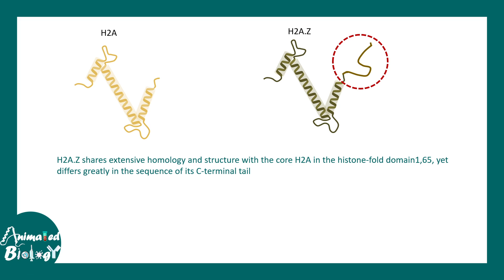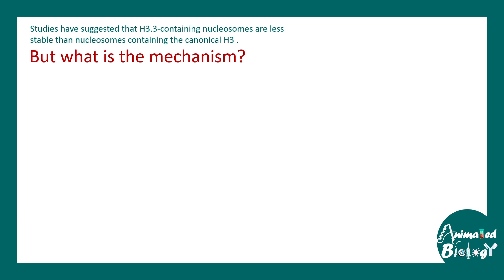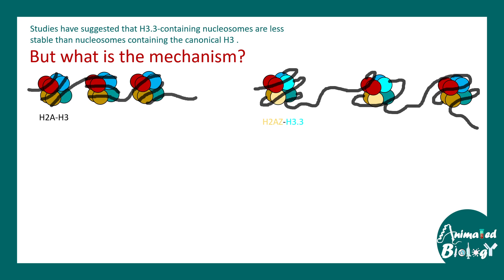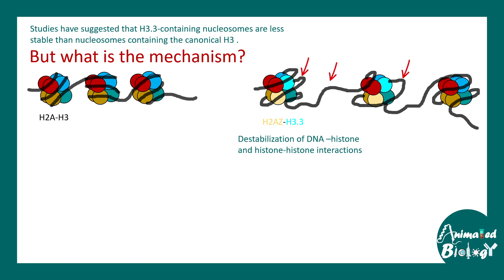The difference between H2A.Z and canonical H2A lies in the C-terminal tail — the other structures are pretty much the same. Studies have suggested that H3.3-containing nucleosomes are less stable. The mechanism is that when there is a combination of H2A.Z and H3.3 in a nucleosome, the DNA-histone interactions and the histone-histone interactions are weakened.